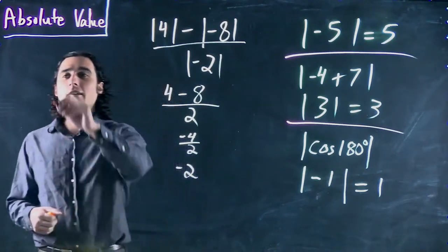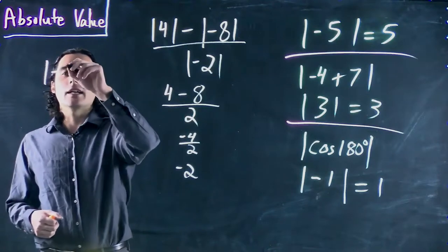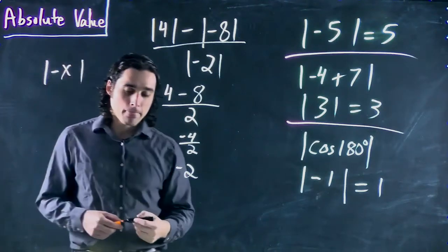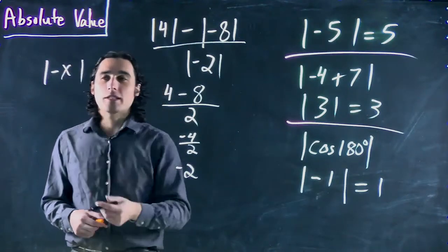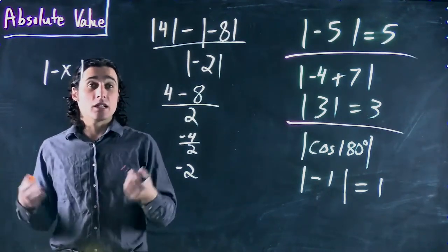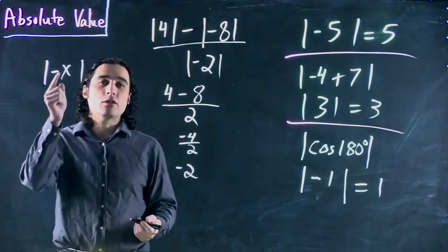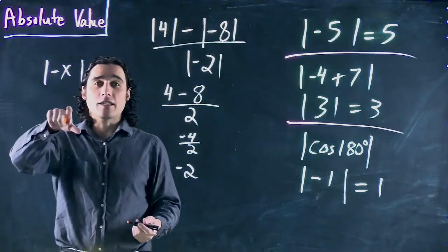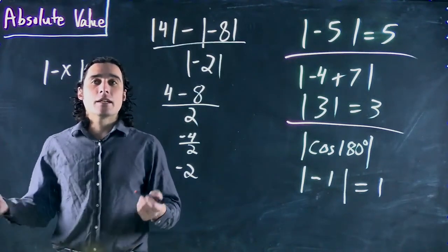But what if I had the absolute value of minus x? The thing is, most people are going to be tempted to put x. Whatever's in the absolute value bar becomes positive. The problem is we don't know what x is. You couldn't evaluate this. You'd leave it as it is, because